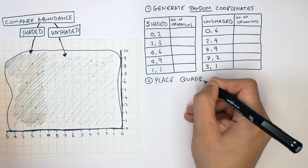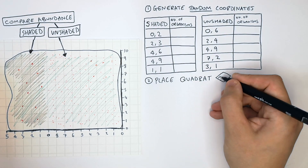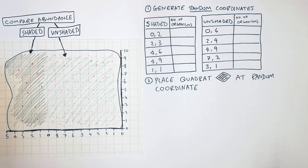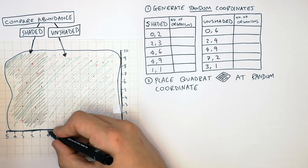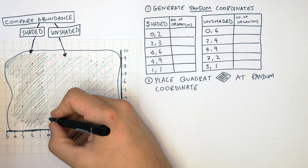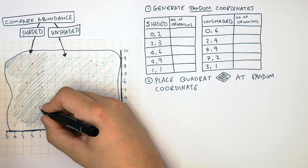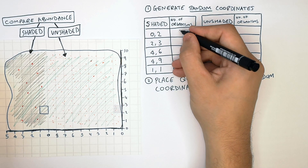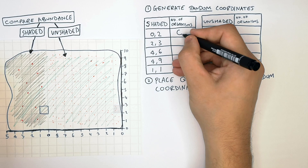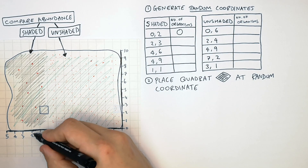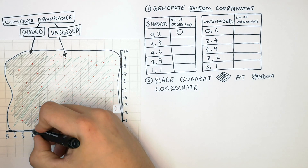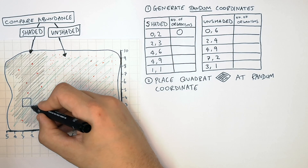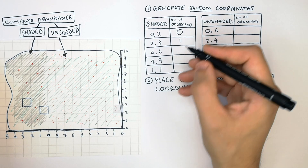You now place the quadrat at each of the randomly generated coordinates. Place the quadrat at coordinate (0, 2) and count the number of organisms inside — in this case there are 0 plants. Then place the quadrat at the next coordinate (2, 3) and count the organisms, which is 1 plant.